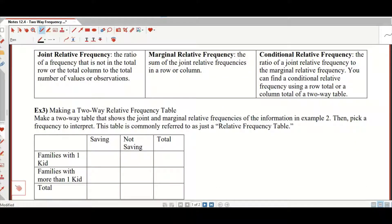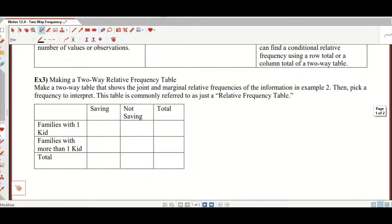Now, joint relative frequency is the ratio of a frequency that is not in the total row or the total column to the total number of values or observations. Marginal relative frequency is the sum of the joint relative frequencies in a row or column. And the conditional relative frequency, the ratio of a joint relative frequency to the marginal relative frequency. You can find a conditional relative frequency using a row total or column total of a two-way table.